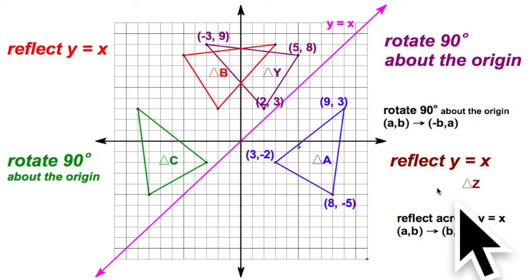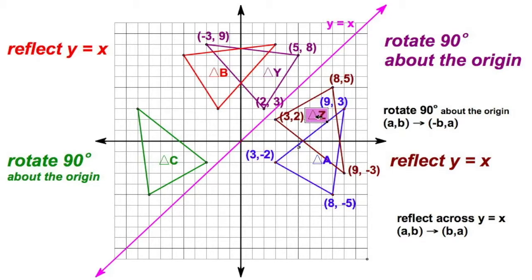And reflect it over the line Y equals X. Now, we're going to this rule. 2, 3 is going to flip over to 3, 2. Got the hang of that. 5, 8, well, that's going to be 8, 5. Negative 3, 9, well, I guess 9, negative 3. And you can see, let's make that one the brown triangle. And I'll refer to that as triangle Z. And you can see what we have here. Clean it up a little. Take out some of those coordinates. And you can see what's happened here.